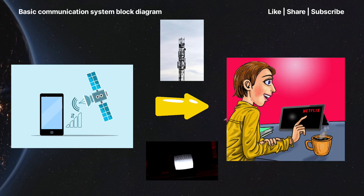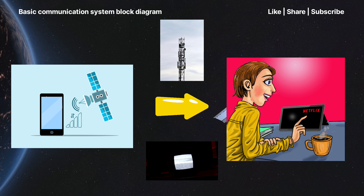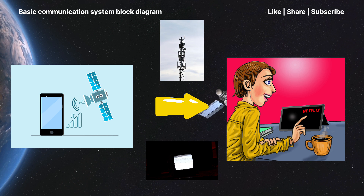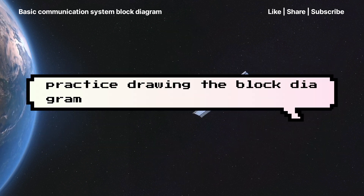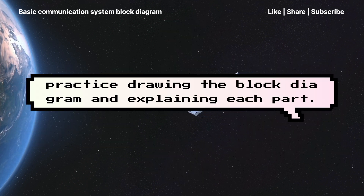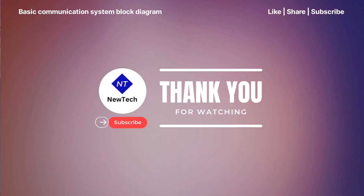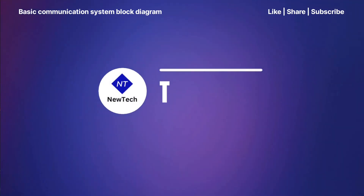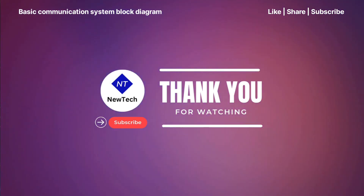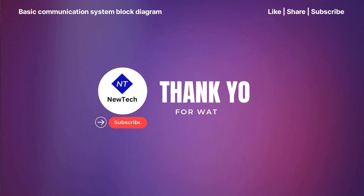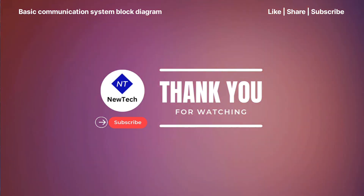To summarize, a basic communication system sends information from source to destination, using a transmitter, channel, and receiver, all while trying to overcome noise. If you are a student, practice drawing the block diagram and explaining each part. If you found this video helpful, give it a thumbs up, subscribe to the channel, and hit the bell icon so you never miss a lesson. Drop your questions in the comments – I reply to everyone.